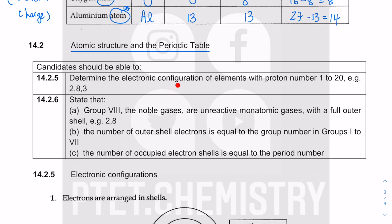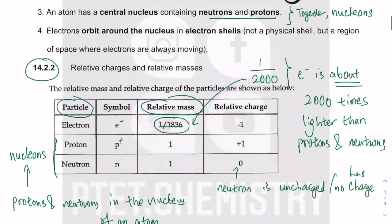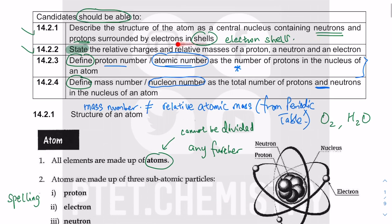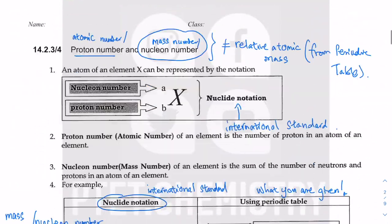Electronic configuration basically refers to how we fill the electrons in the electron shells. If you recall from the previous lecture tutorials, we have the structure of an atom with the nucleus in the middle consisting of protons and neutrons. The electrons are orbiting around the nucleus in this region of space we call electron shells.